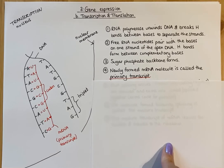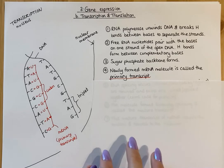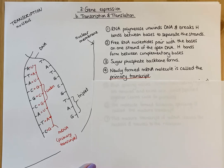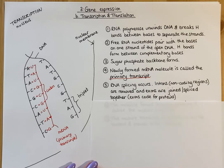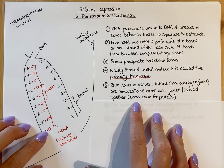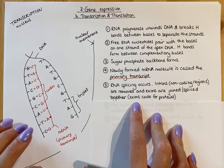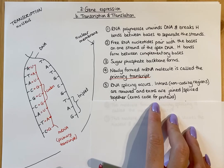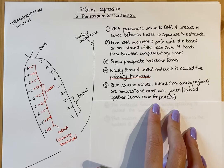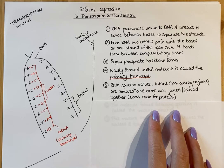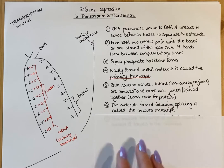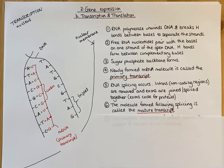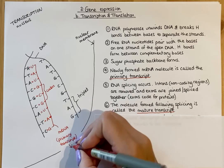The primary transcript contains two different sections. It contains areas called introns, which do not code for protein and therefore aren't useful. And it contains areas called exons, which do code for protein. What we do at this stage is splice it — the introns, the non-coding ones, will be removed, and we splice together the exons, the areas that do code for protein. Once we do that, we form a mature transcript, and it is this mature transcript that can leave the nucleus.